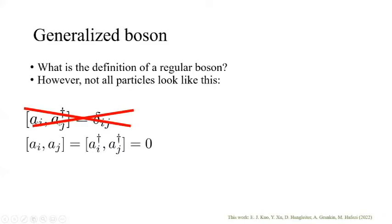Let's talk about our work. Let me define generalized bosons. What's the definition of regular bosons? Just to recap, for regular bosons, we have [a_i, a_j dagger] equals delta_ij. For generalized bosons, we discard this relation and only require that for different sites, they must commute.